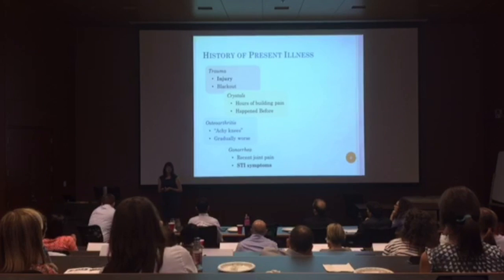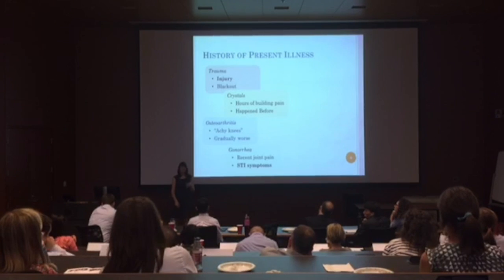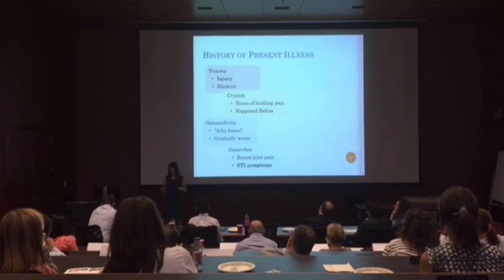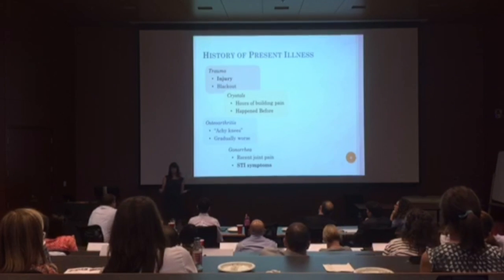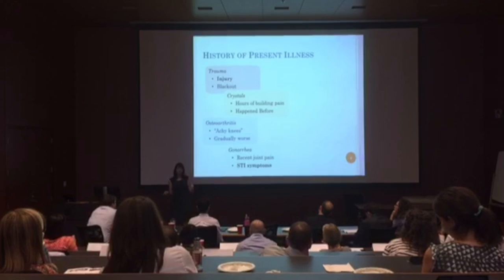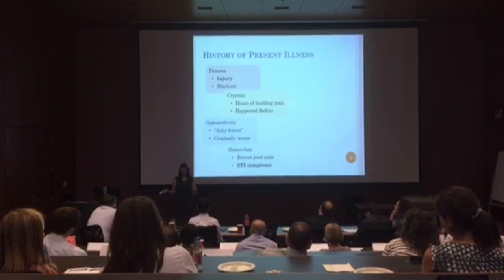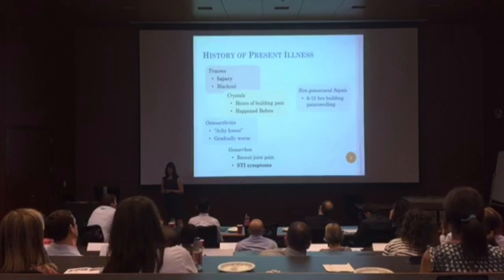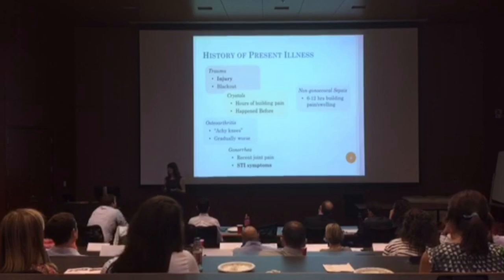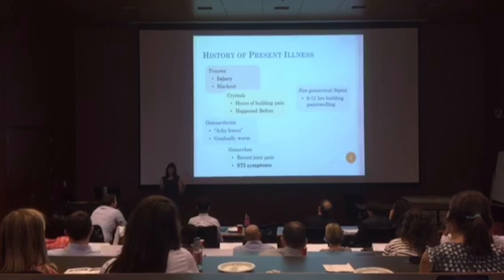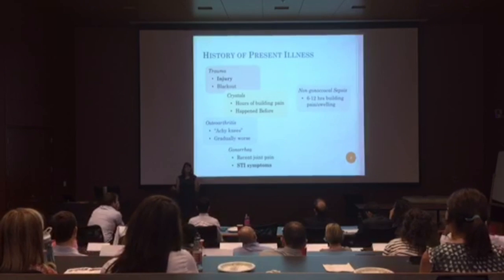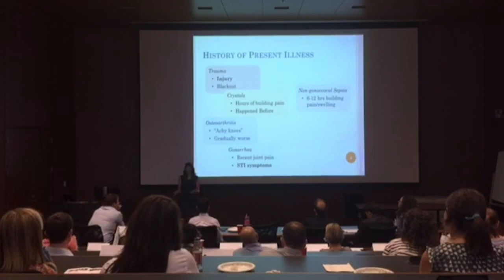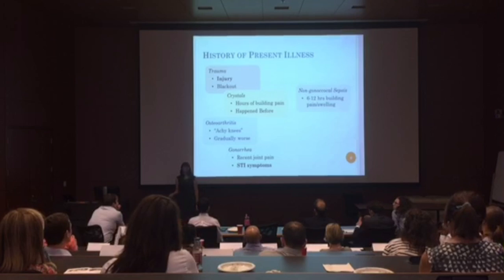For gonorrhea, they might describe recent joint pain in different joints — a migratory arthritis picture — and they might also describe sexually transmitted infection symptoms like discharge, itchiness, or burning. For non-gonococcal sepsis, it's not terribly specific, but you're talking about six to twelve hours of building burning pain, heat, and limited range of motion.